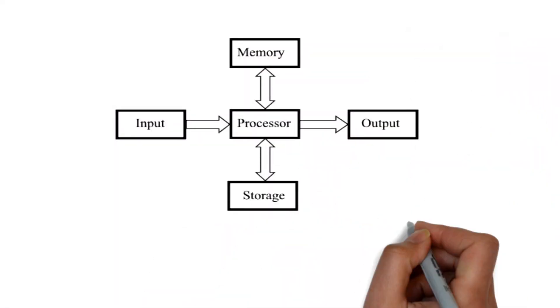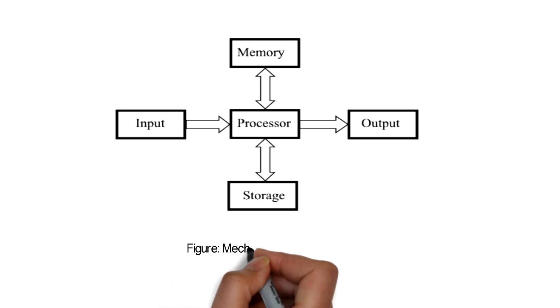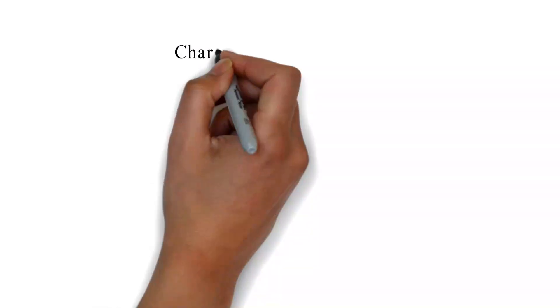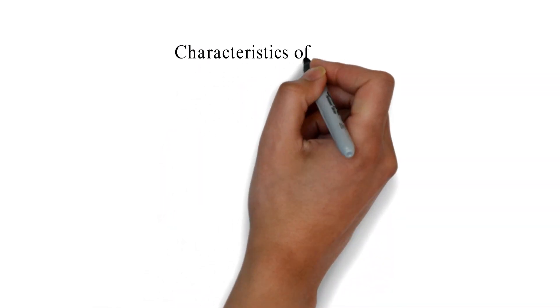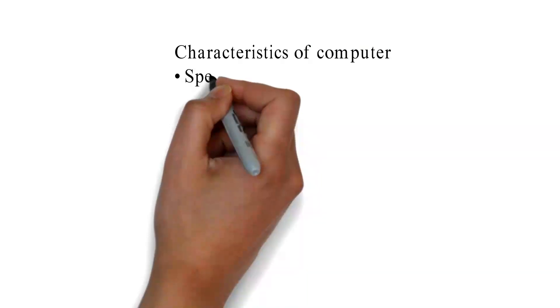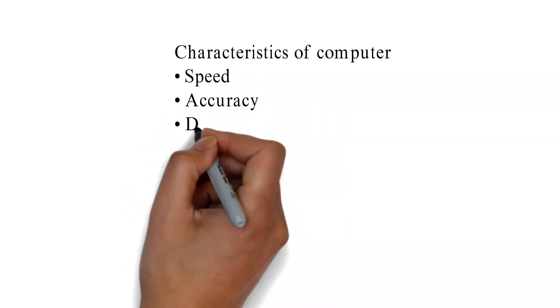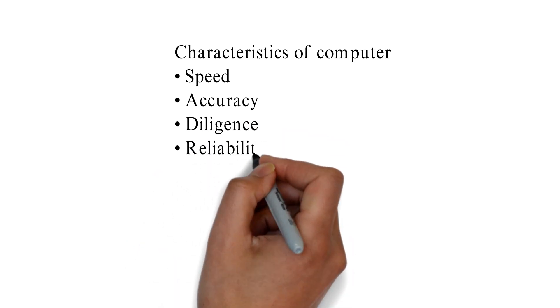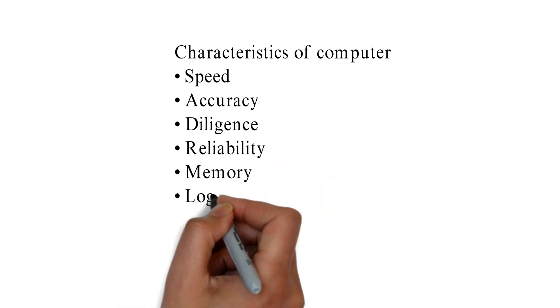The given figure shows the mechanism of computer and how it works. Here you can see input, process, output, memory or storage. Characteristics of computer: speed, accuracy, diligence, reliability, memory, logical, versatility, automation.